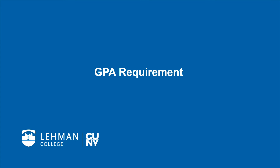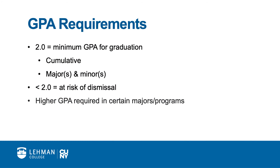All students must also meet minimum grade requirements to continue their enrollment at Lehman and satisfy graduation requirements. 2.0 is the minimum GPA required for graduation. This 2.0 applies to your overall Lehman GPA, known as your cumulative GPA. It also applies to your declared major or majors, as well as to any declared minors. Students are required to have an overall GPA of 2.0 in all courses taken in their major and minor departments. In most cases, a 2.0 cumulative GPA is also required to remain in good standing at Lehman. Students whose GPA falls below 2.0 may be at risk of dismissal. It is important to note that while 2.0 is the college-wide GPA requirement, certain programs and majors may have higher GPA and or course grade requirements for entry, continuation, and graduation.